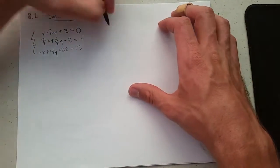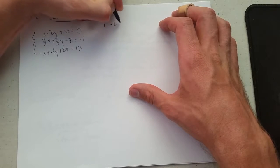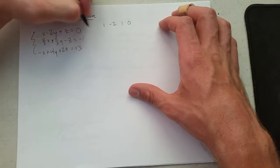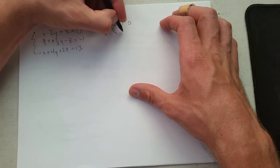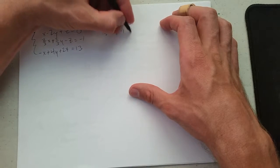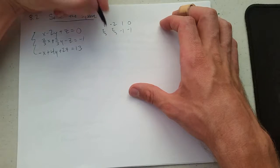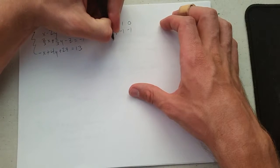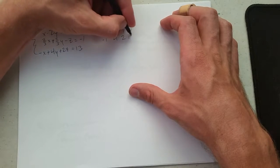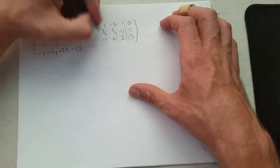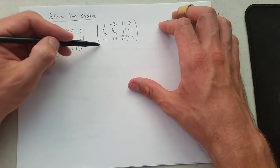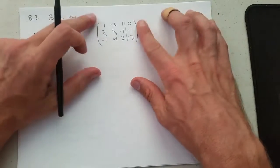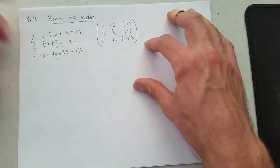Step 1, write the matrix. 1, negative 2, 1, 0. 2 thirds, 2 thirds, negative 1, negative 1, negative 1, 4, 2, 13. Now if you've written enough matrices, you find out that making little corners takes too long, you can just write big parentheses, totally okay.